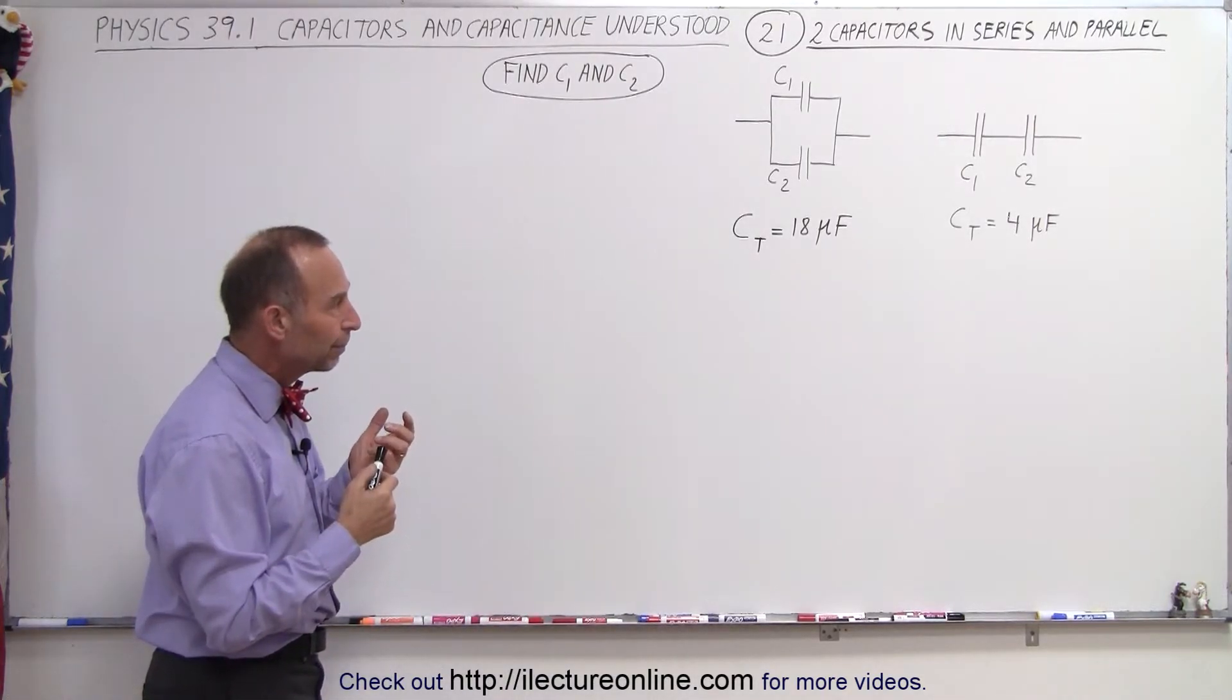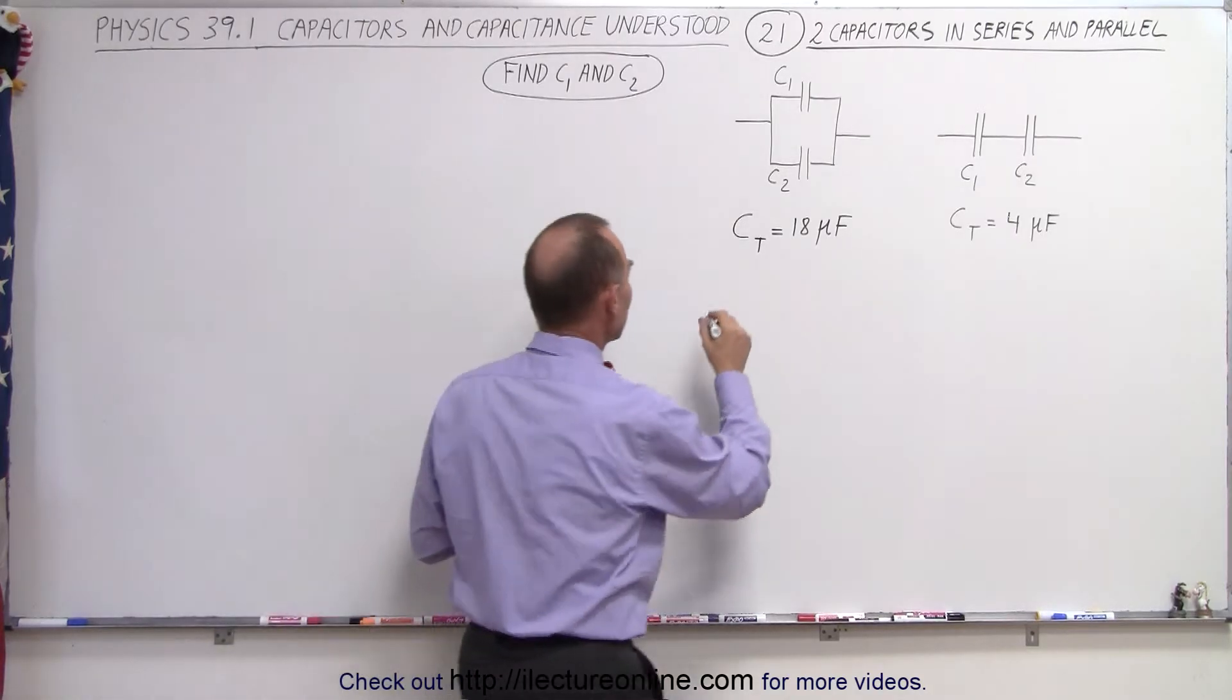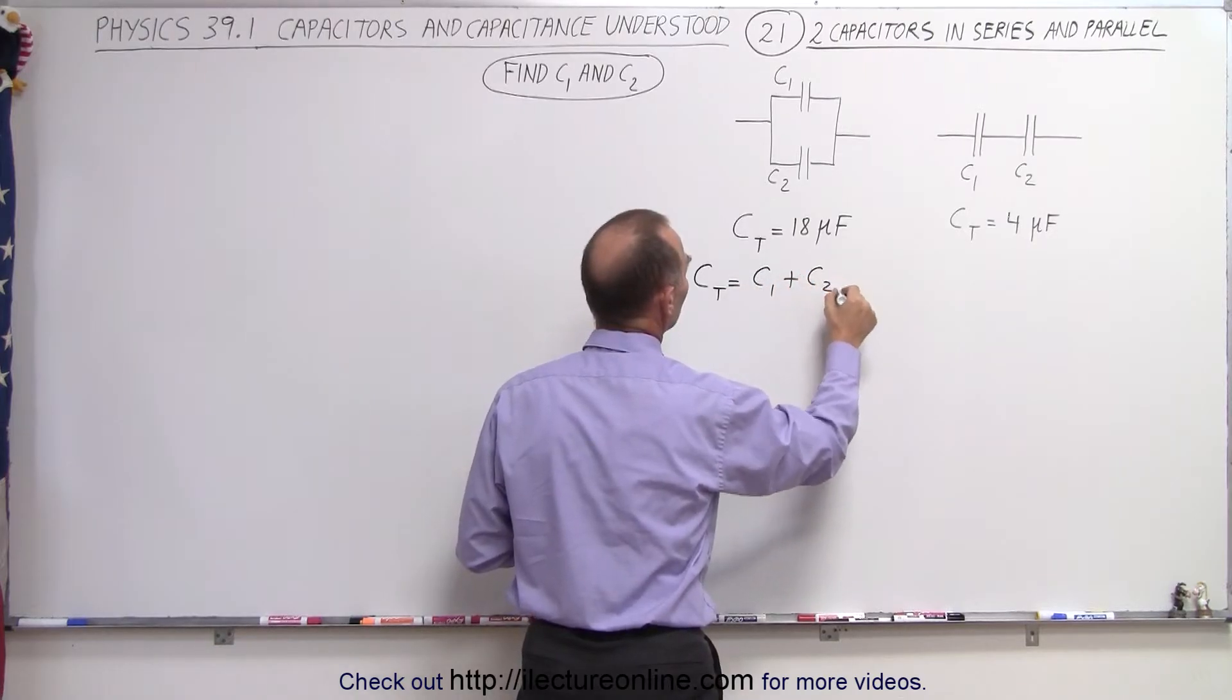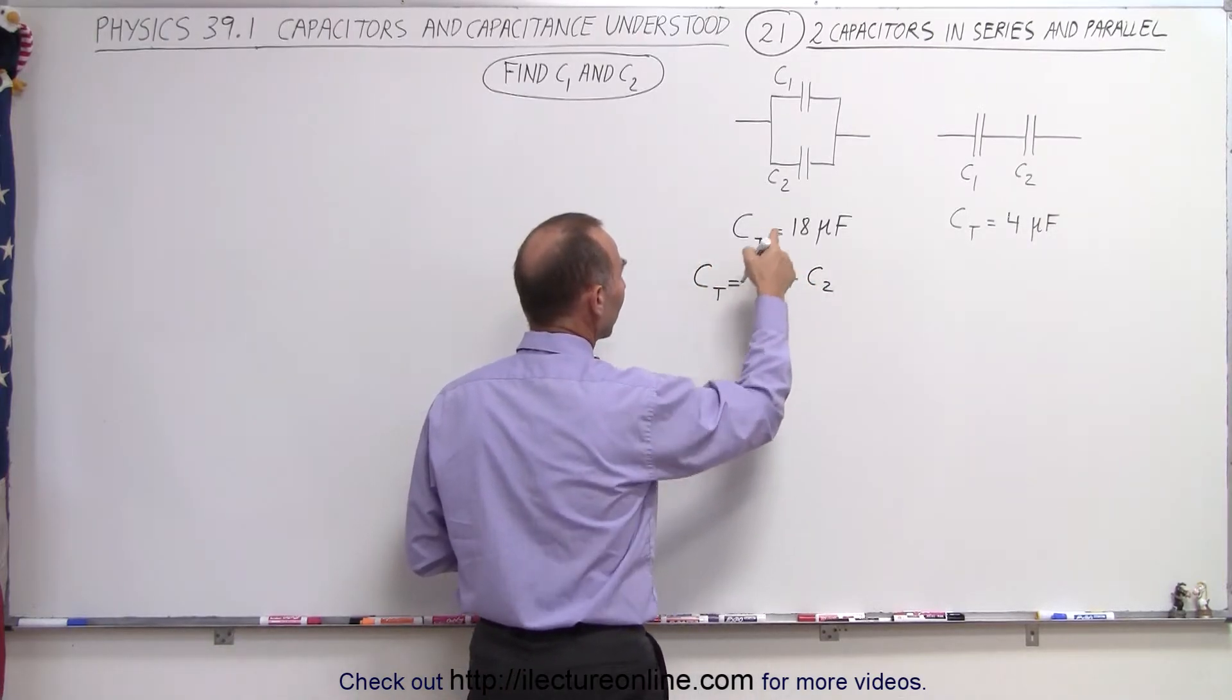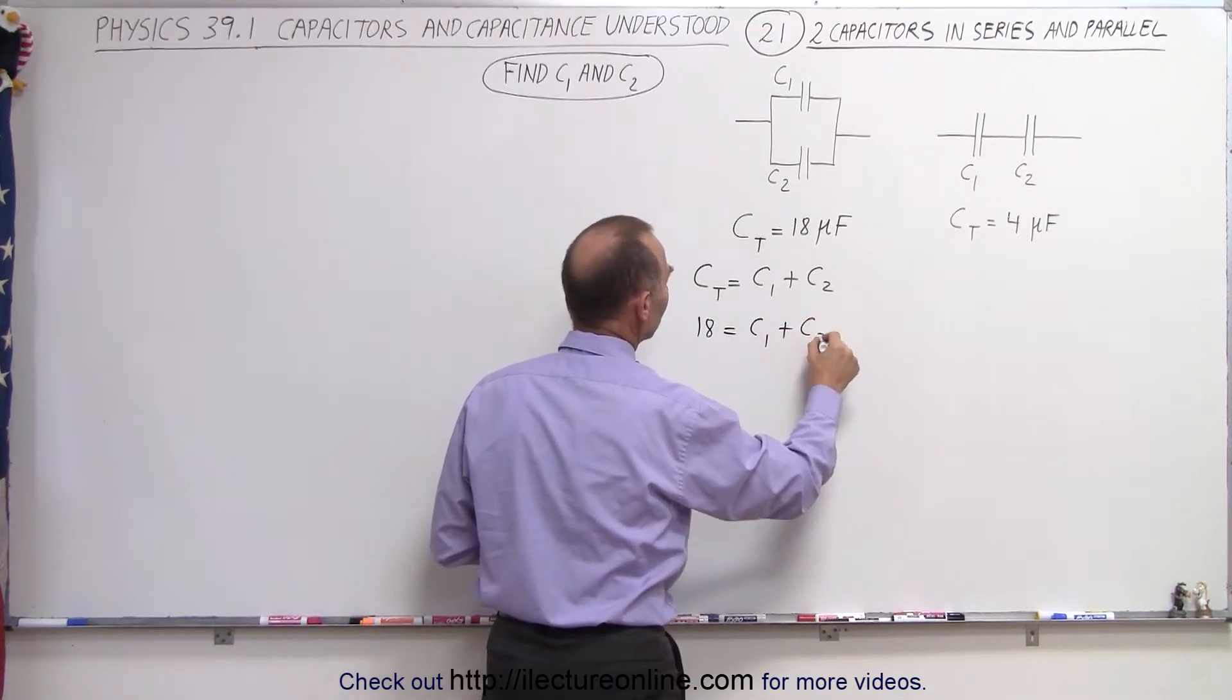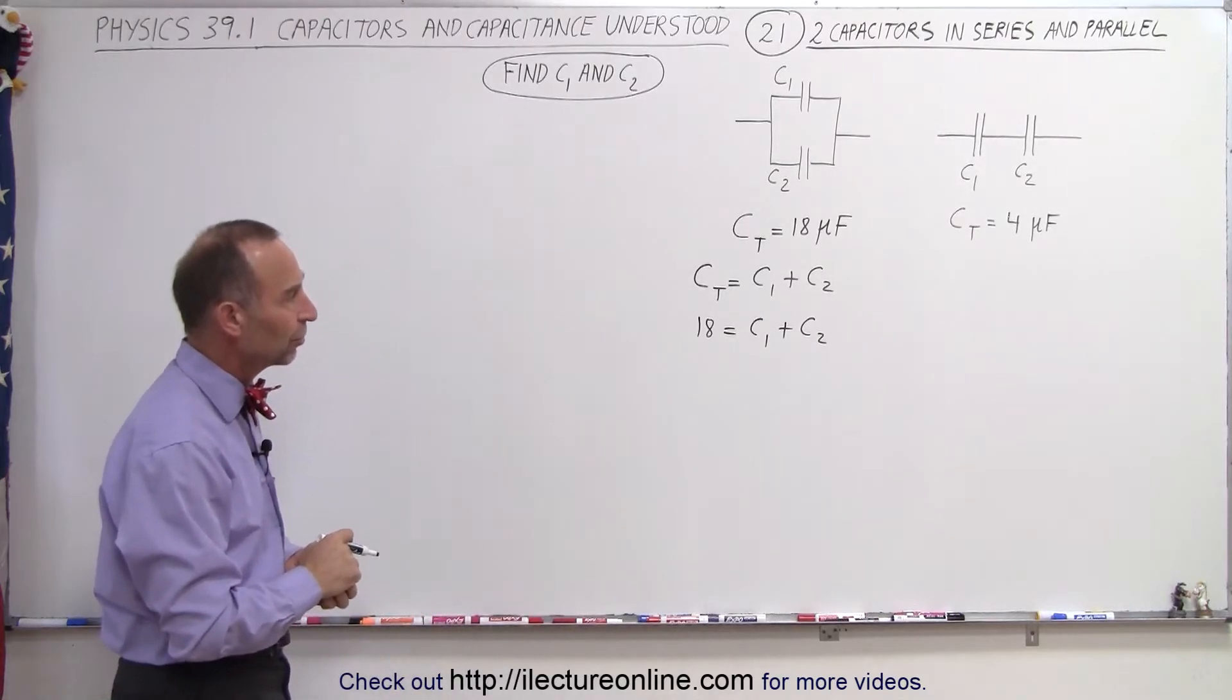Well, when capacitors are connected in parallel, we simply add them algebraically, which means that in this case, C total must be equal to C1 plus C2, which then implies that the total being 18 is equal to C1 plus C2, and we're leaving off the units to make it cleaner and easier to work with the equations.